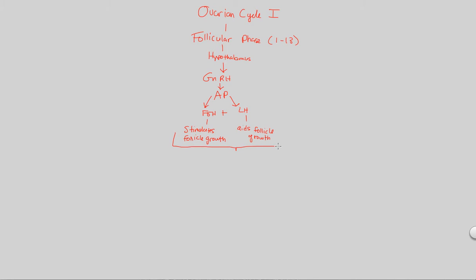FSH and LH from the anterior pituitary are going to go to the ovaries. Now let's take this hormone cascade and talk about what happens at the ovaries. What are the end results of this FSH and LH secretion?